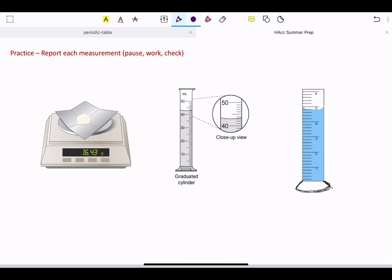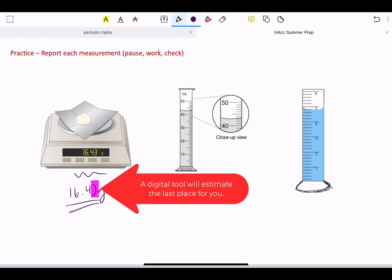Okay, so now let's do our practice. This one is easy. This is a digital balance. The digital balance does the estimating of the last place for you, which means if my balance says 16.43 grams, I have 16.43 grams. Those are always going to be the easiest.